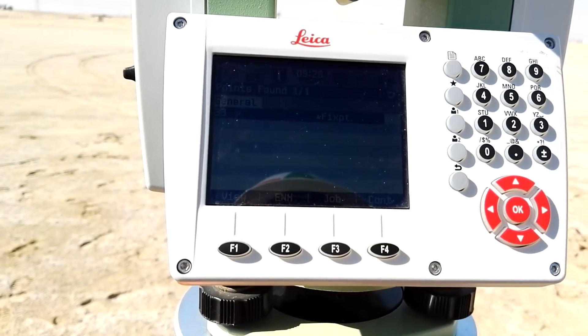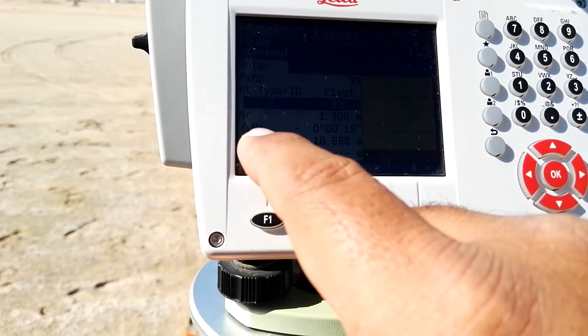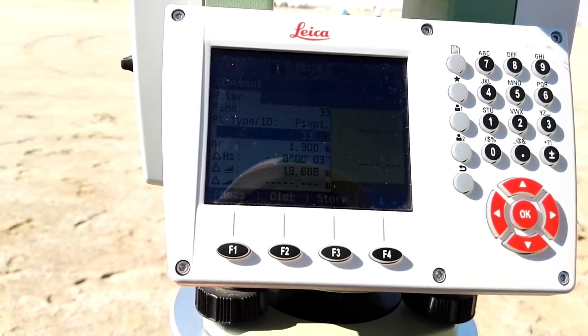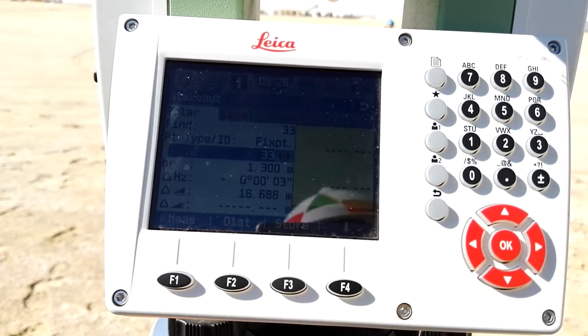So again F4 to continue. Then I will bring HZ to zero and then I will arrange my chainman.